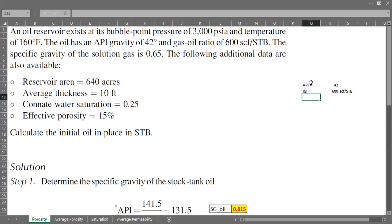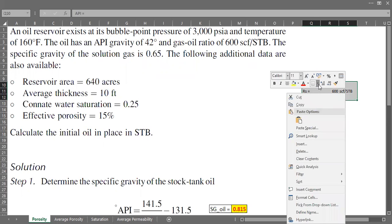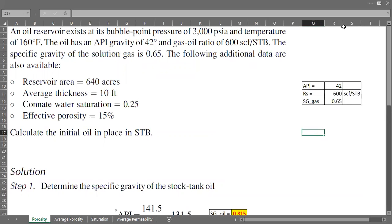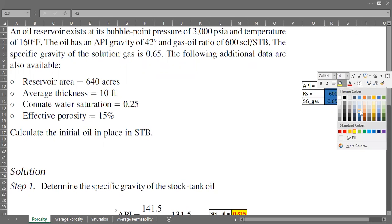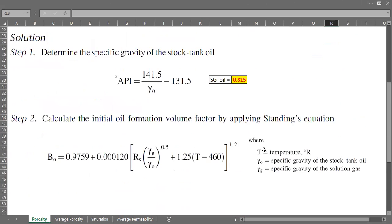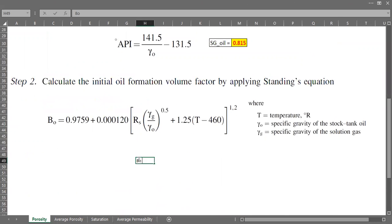I will make the data first here: API 42, and then GOR or rather Rs of 600 SCF per STB, and then specific gravity of gas SG gas is 0.65.